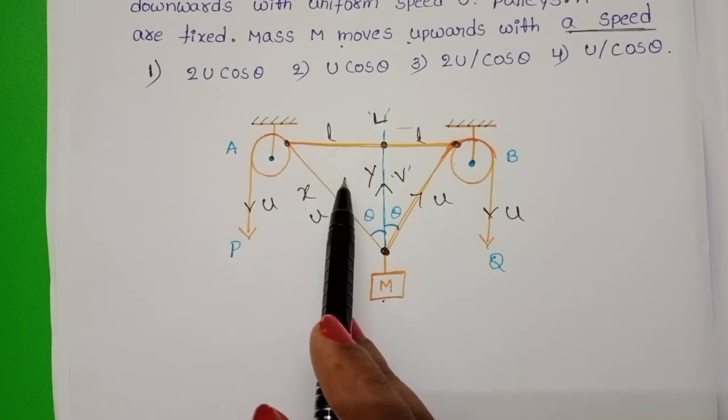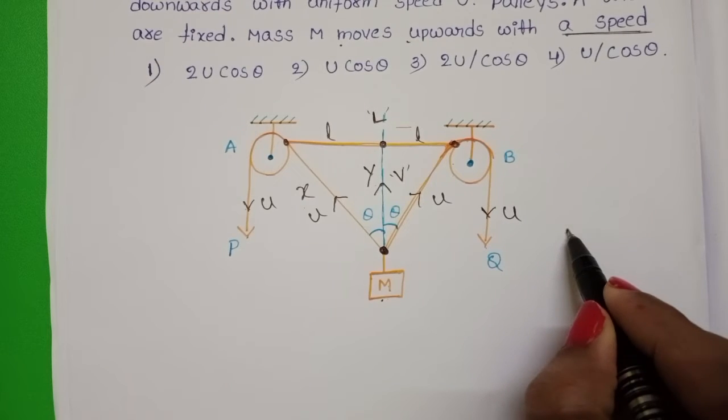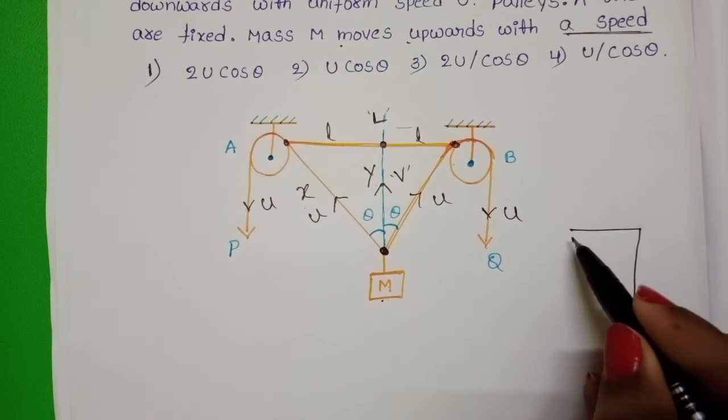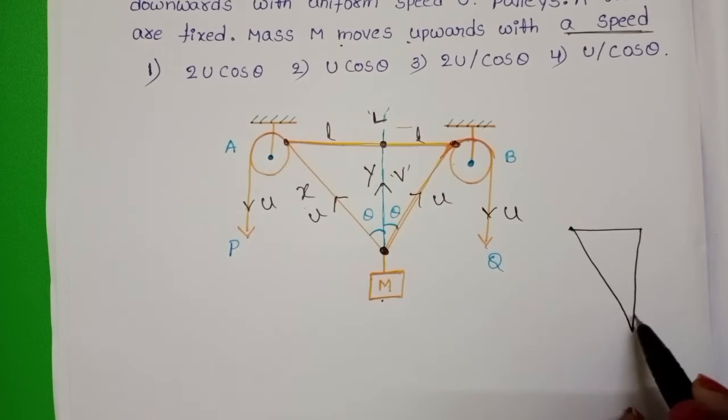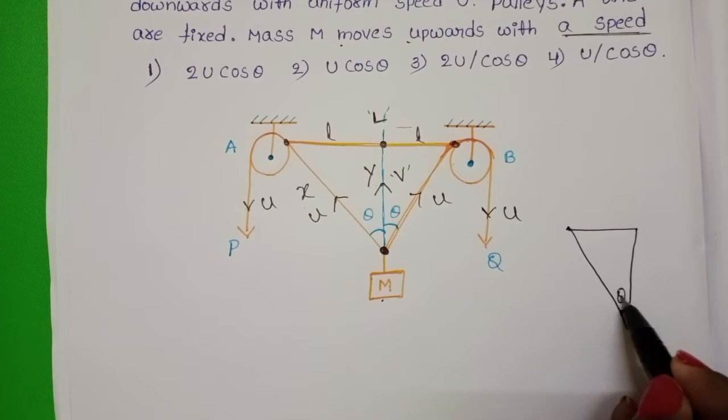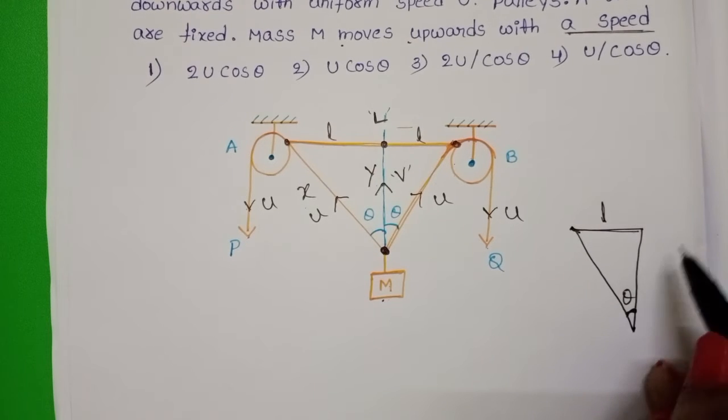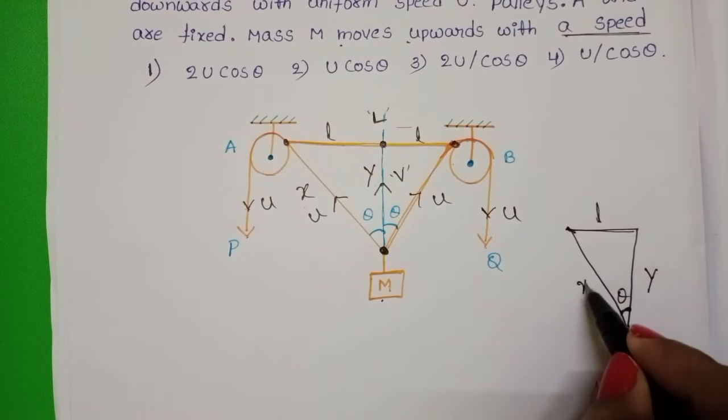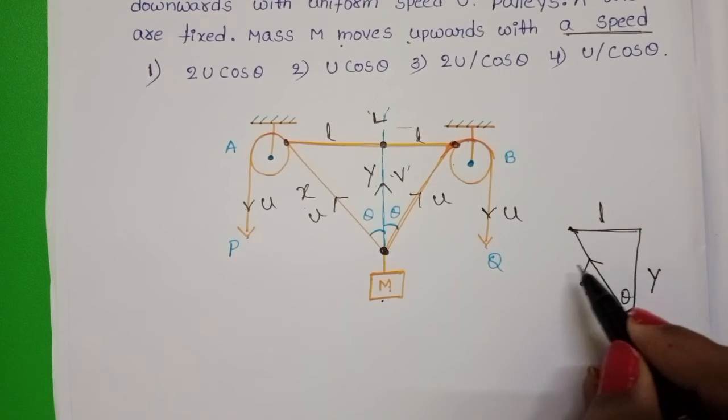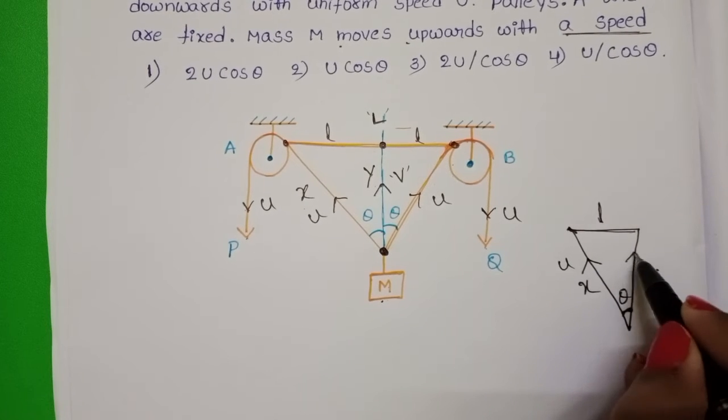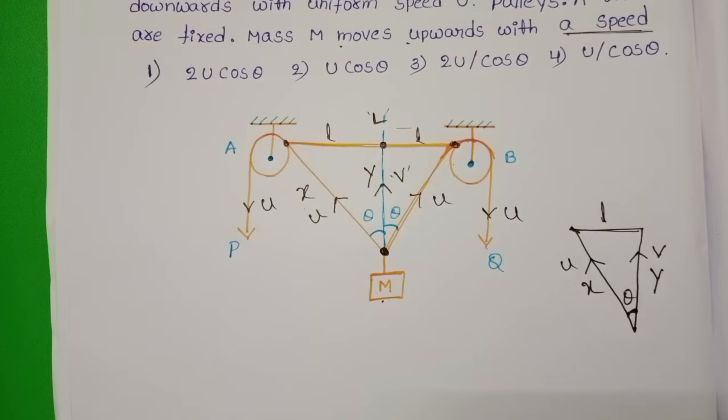This is like right angle triangle. Draw this triangle here. Given angle is theta. And this is L. This length is Y. And this is X. Along this direction speed is U. And along this direction speed is V.